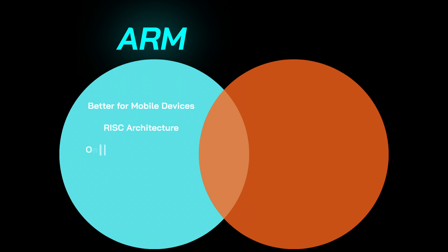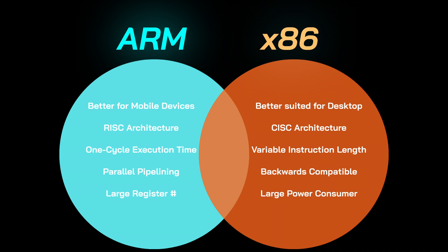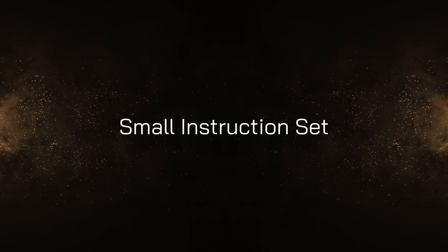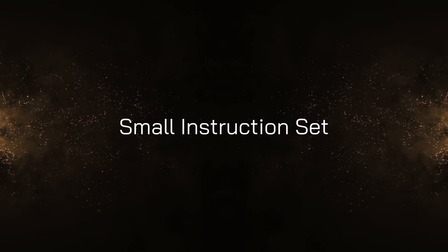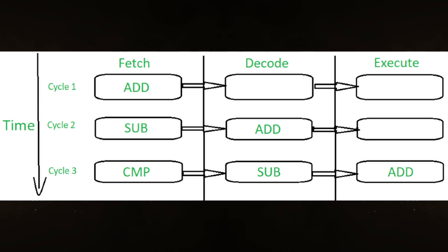ARM was designed to be smaller, cheaper, and consume less power than other architectures like x86. In order to understand how, let's go deeper. ARM utilizes a RISC architecture. RISC uses a small set of simple and general purpose instructions, where each is designed to execute in a single clock cycle. These instructions are typically a fixed size — for example, 32 bits — which simplifies fetching and decoding.